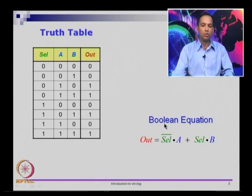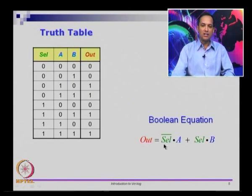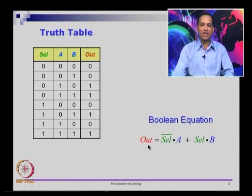Finally, you can also write it as a Boolean equation. We said when select is 0 we want a, and when select is 1 we want b — you can write this as a Boolean expression. SEL complement means if SEL is 0, SEL complement is 1. So when select is 0, you AND SEL-complement with a; when select is 1, you AND SEL with b. If SEL is 1, the first term becomes 0 and b is passed to the output. If SEL is 0, the second term is 0 and SEL-complement AND a gives the output. This is a Boolean expression you can directly write.